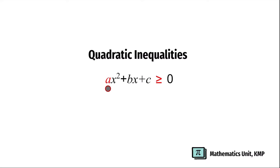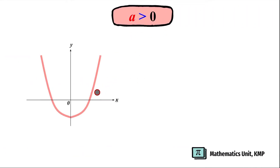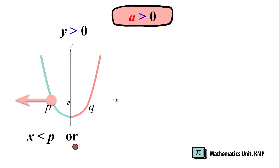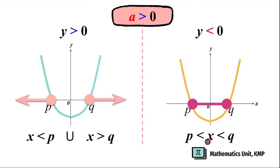Now let's focus on a. If a is positive, then we're going to have a smile graph. Let's denote the x-intercepts as p and q. If y is positive, then the solution is going to be on the left and right of the graph, where x is less than p or x is greater than q. We can also use the union symbol. If y is negative, then the solution is going to be in the middle, where x is greater than p and x is less than q.